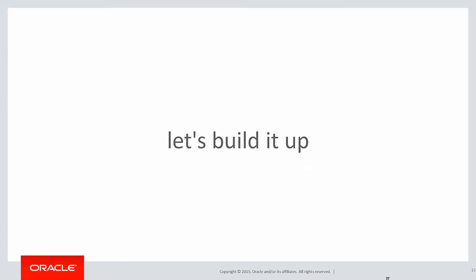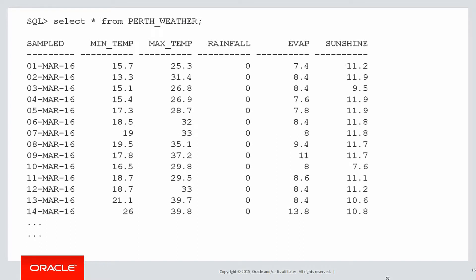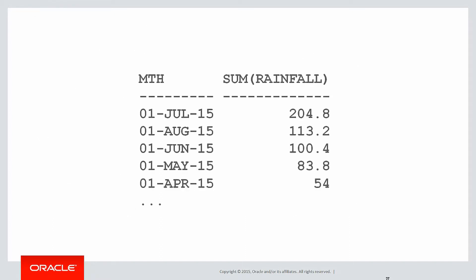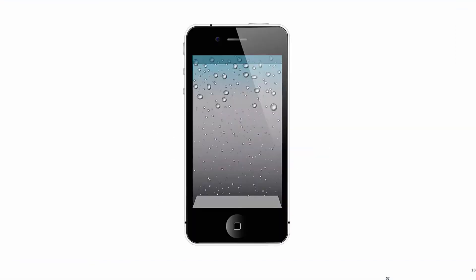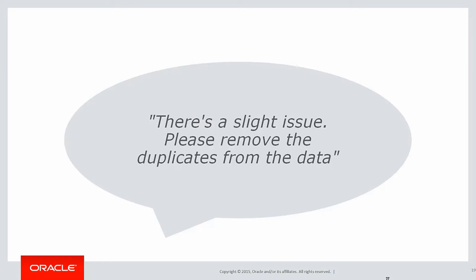Rather than give you the requirement like we've been doing in previous videos, let's build it up slowly as to how it might happen in a workplace. Here's our raw data — it's a sample taken every day for the weather in Perth where I live. Your manager has produced the following report, simply summing up by month to give the total rainfall, and he's gone upstairs to his higher management and said definitively it looks like July is the month where we had the most rainfall.